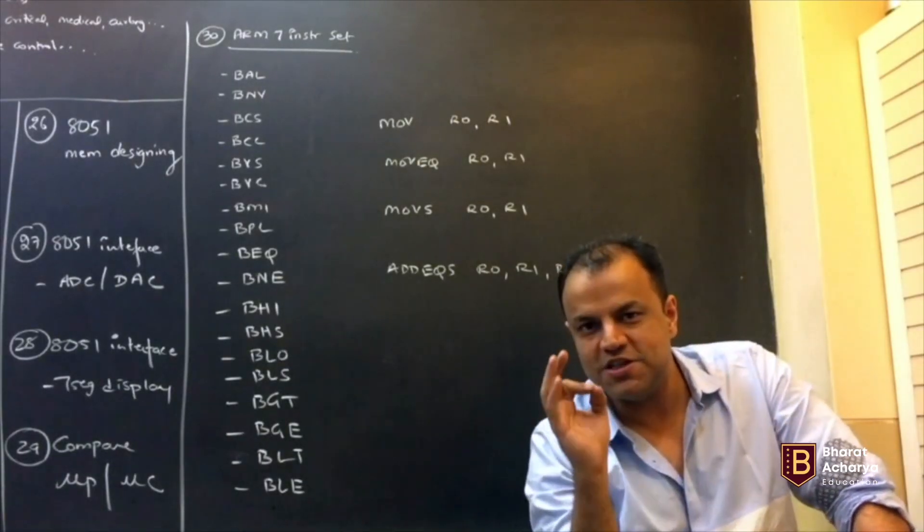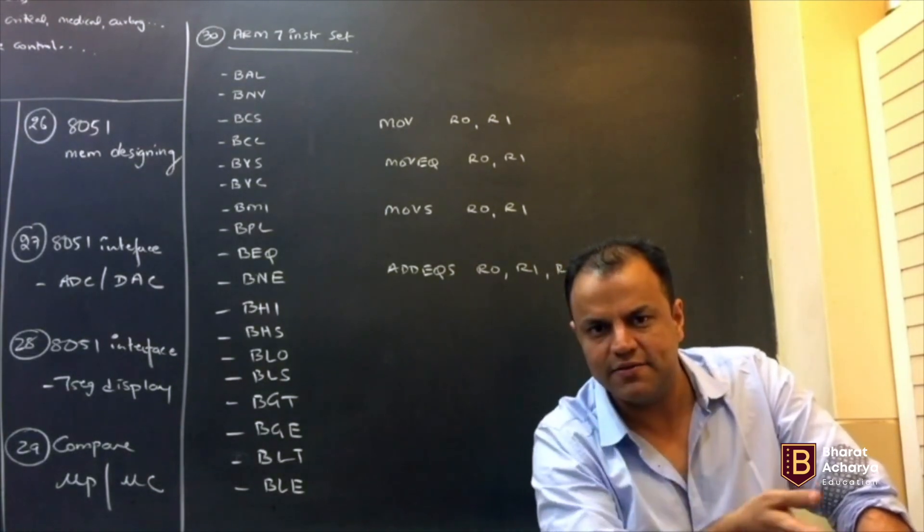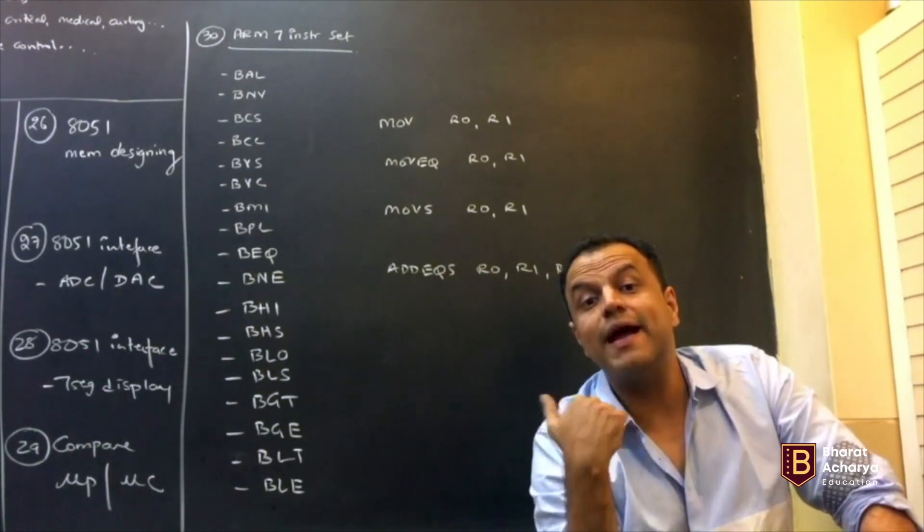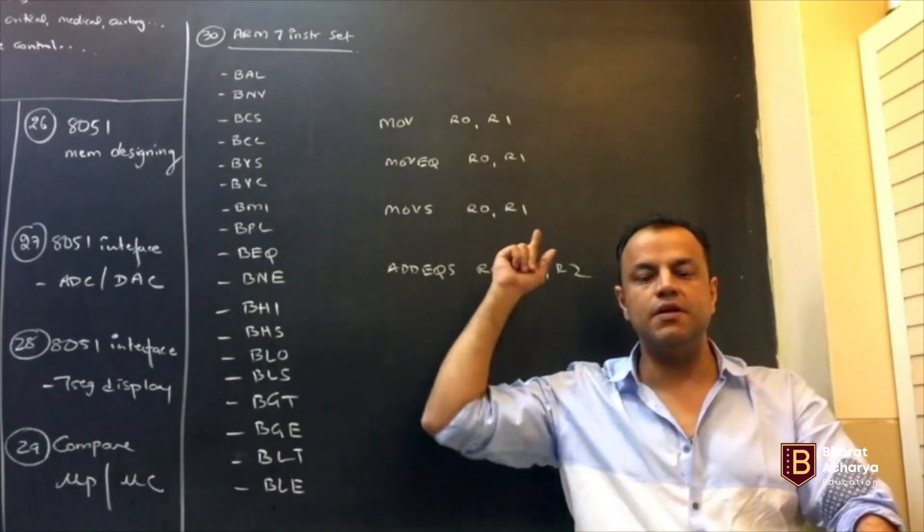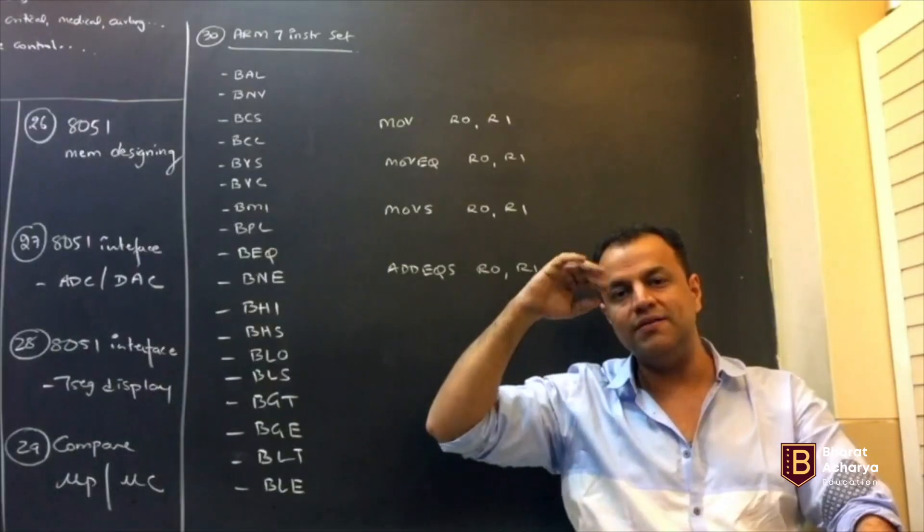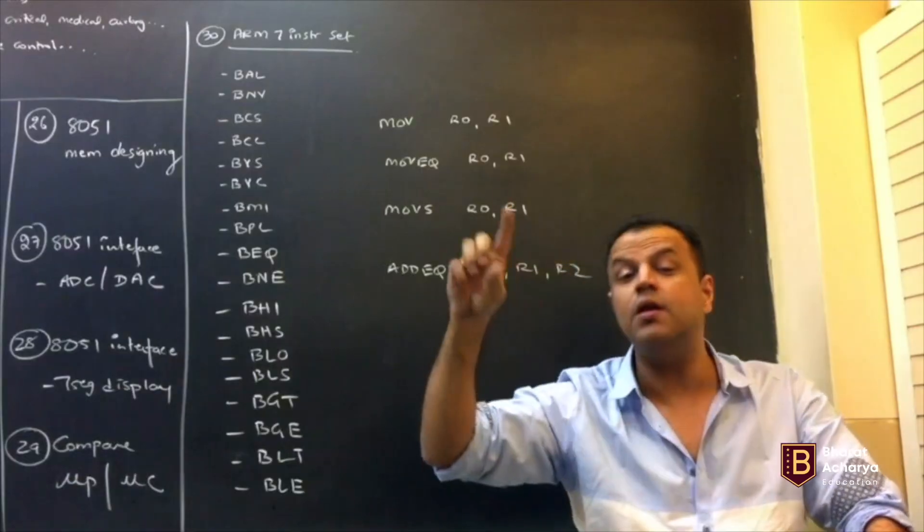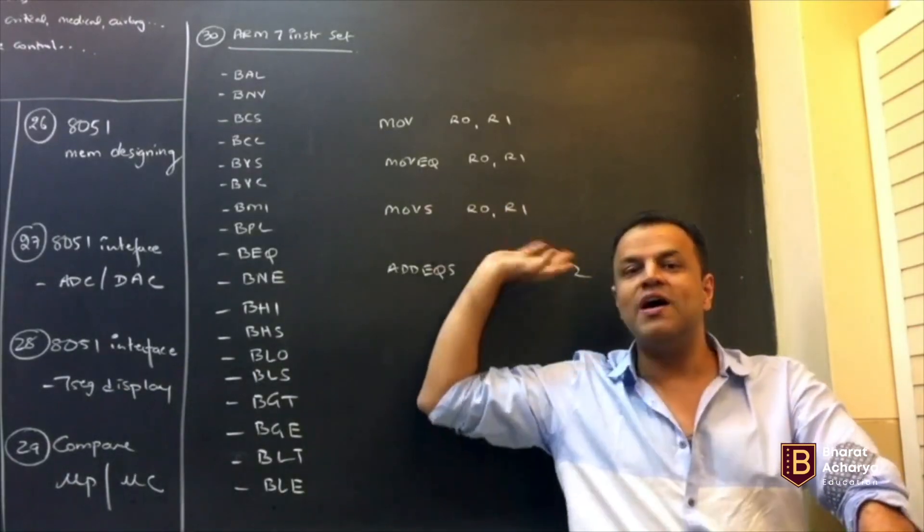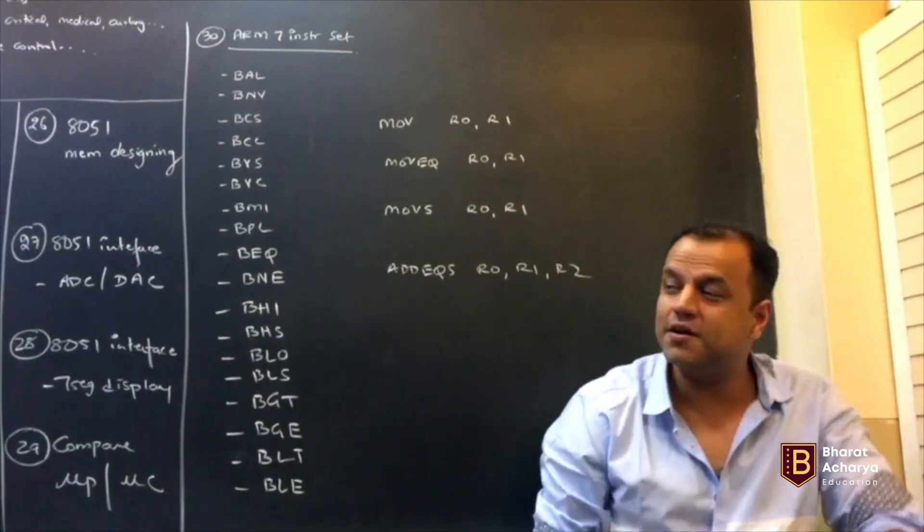When you write JC, what does JC mean? Jump if carry. Carry in this instruction? No, how stupid. How can there be carry in this instruction? This is a jump. The carry, the previous instruction caused the carry, then you do a jump. Similarly, when you write MOVEQ, it means if the previous instruction's comparison was equal, then do this move. Otherwise, skip this and go to the next instruction. So every instruction can have a condition.